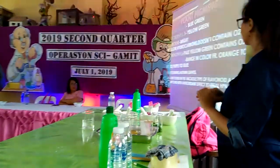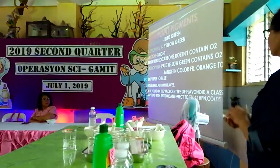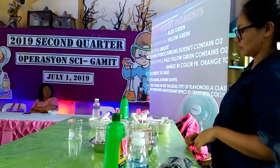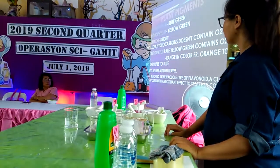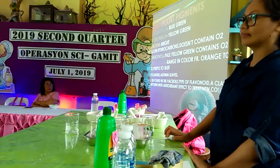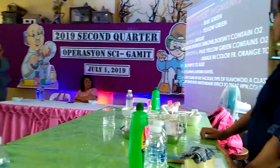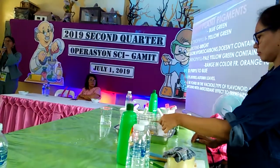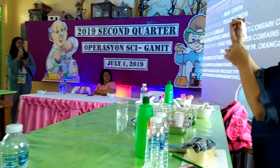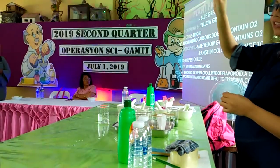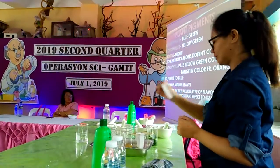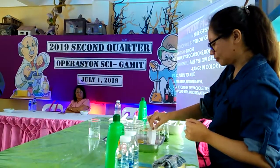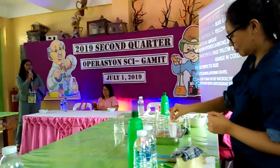Here are the plant pigments that you can see. Chlorophyll A — the color is blue-green. Then yellow-green is chlorophyll B. Carotene — since we also have carrots — is bright yellow; it is a hydrocarbon and doesn't contain oxygen. Then you also have xanthophyll, which is pale yellow-green and does contain oxygen.